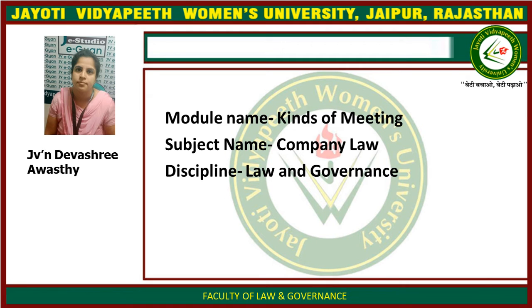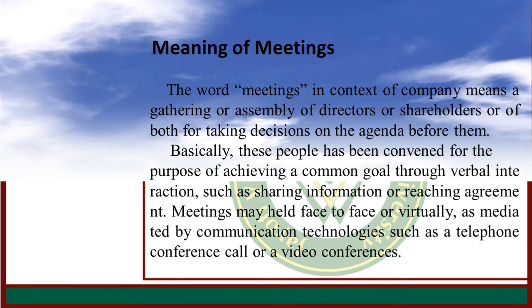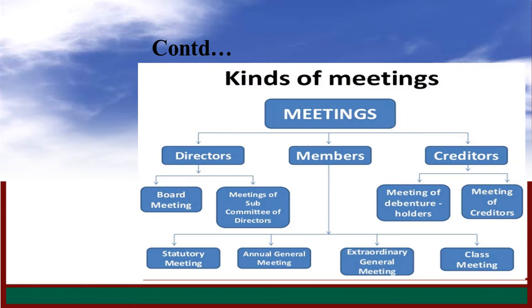The next class topic is Kinds of Meeting. As we already discussed the meaning of meeting in the previous session, today we will talk about the kinds of meeting. Basically, there are three types of meeting: director-based, member-based, and character-based.